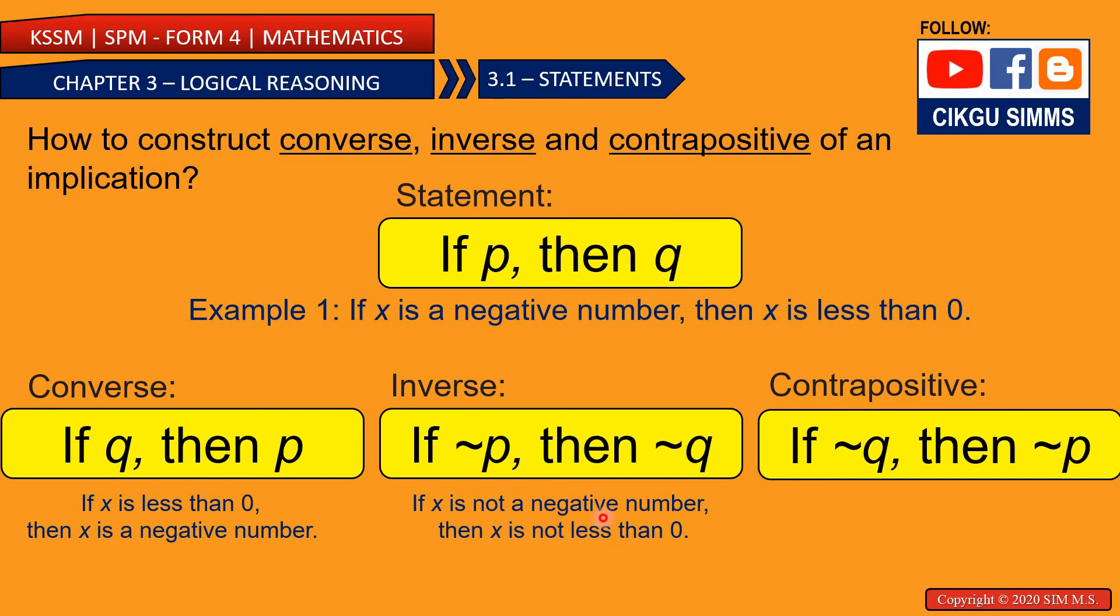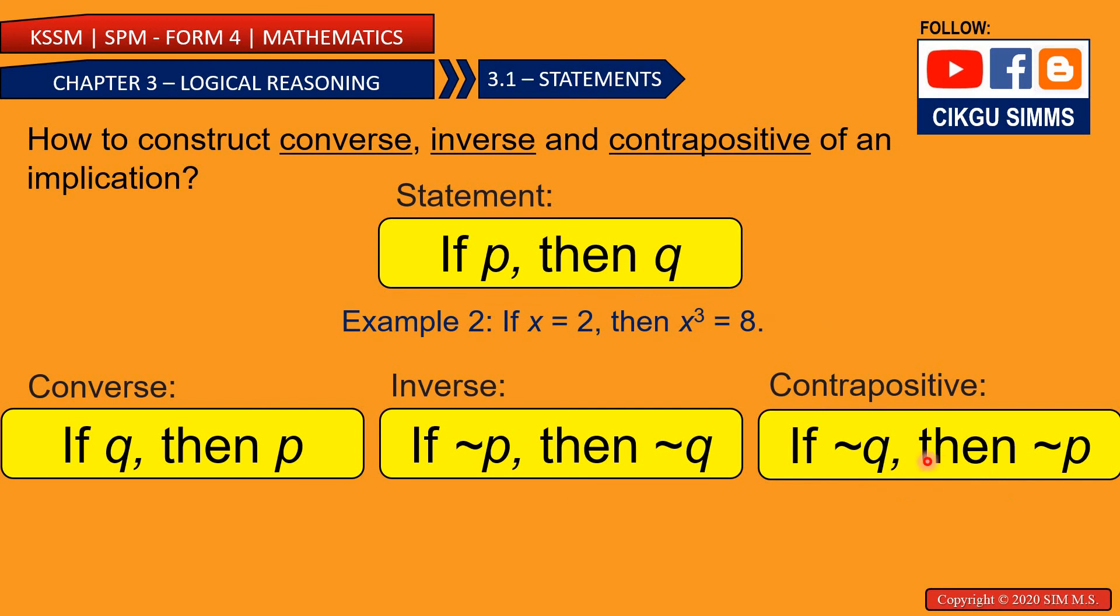And then for contrapositive you need to reverse this. You reverse this too, so if x is not less than 0 then x is not a negative number. So if x is higher than 0 then x is a positive number, that doesn't meaning right.